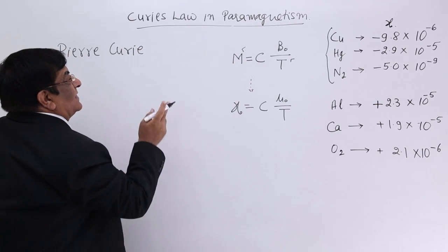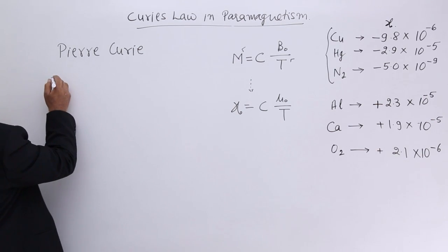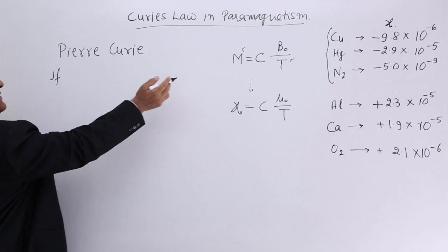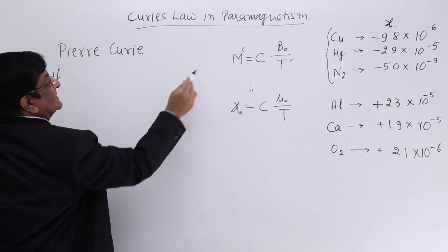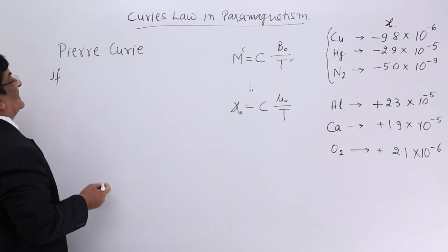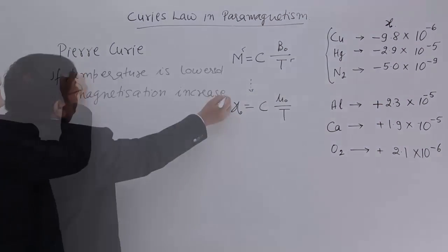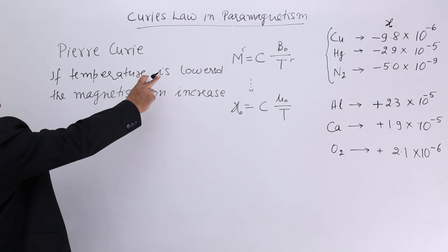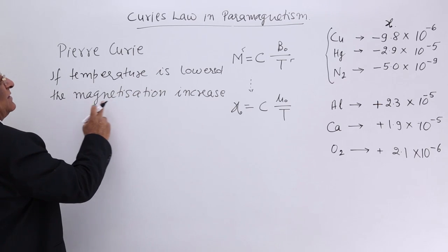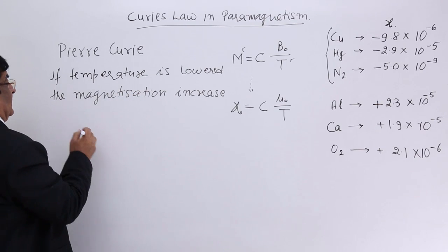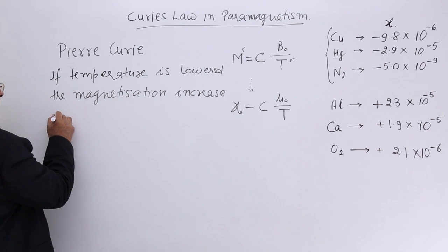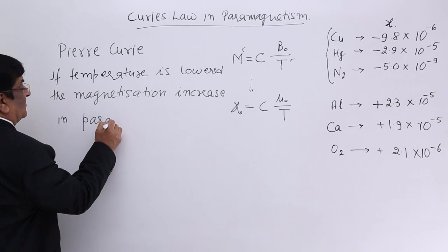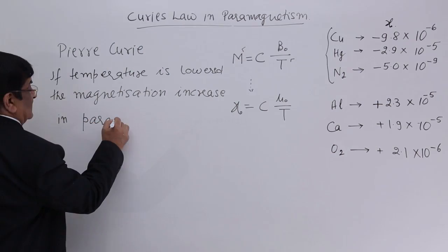Here magnetization and temperature are inversely proportional to each other, meaning that if temperature is lowered, magnetization will increase in paramagnetic substances.